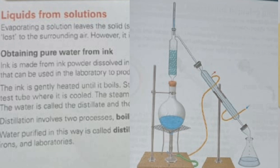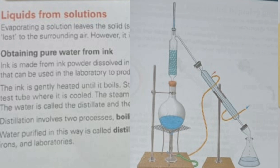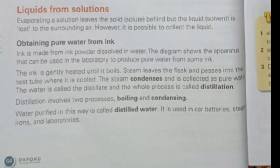The water collected is called distilled water, and the whole process is called distillation. Distillation involves two processes: boiling and condensing. Water purified in this way is called distilled water. It is used in car batteries, steam irons, and laboratories — in experiments that require pure water.